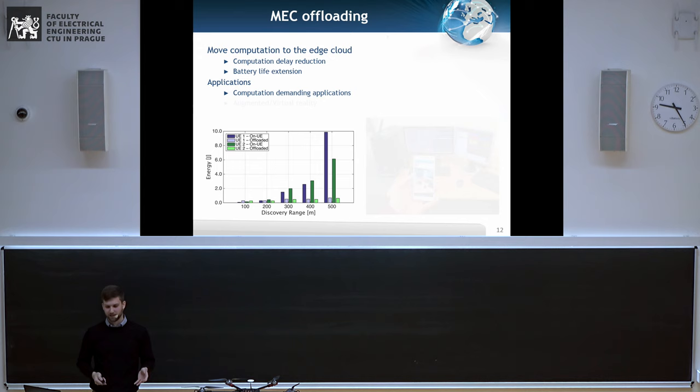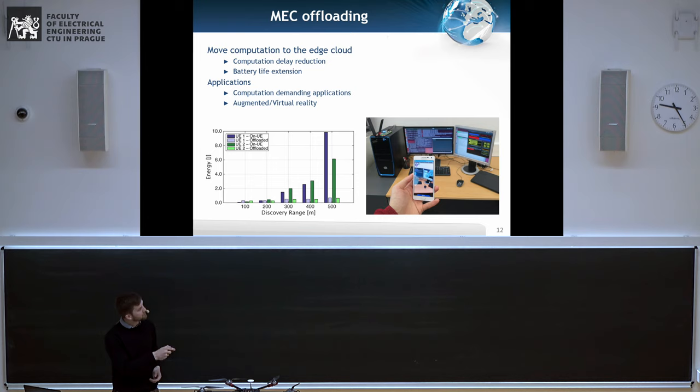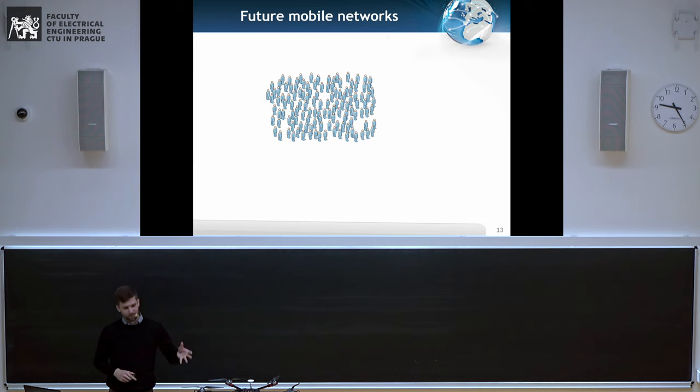You have these computation resources at the base stations and you can use it for computation offloading. If you basically take some application on your phone and run it in the cloud or run it on a device, you can compare also the energy and save the energy, prolong your battery life. And you can use it in various applications: computation demanding applications, augmented reality. For example, we have developed an application which shows you some points of interest around you. You can take the location of the device, where you are looking, send it to the server, and it will return you what you can actually see. Or even Pokemon Go.